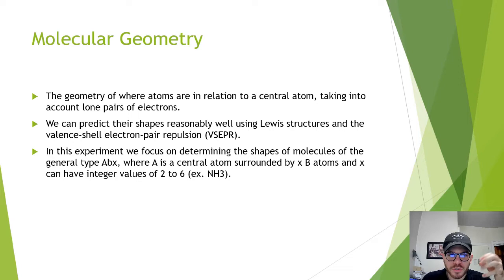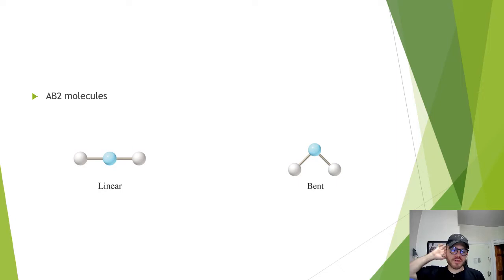In this experiment, we focus on determining the shapes of molecules of the general type ABX, where A is the central atom surrounded by X B atoms, and X can have integer values of 2 to 6. An example is ammonia.